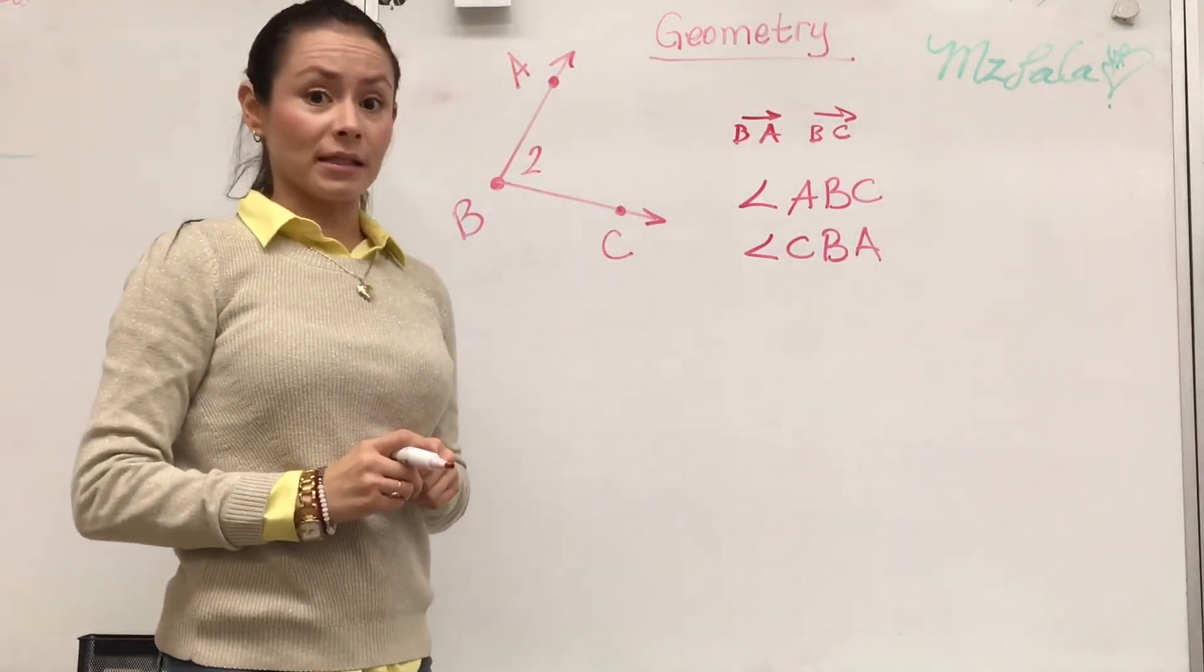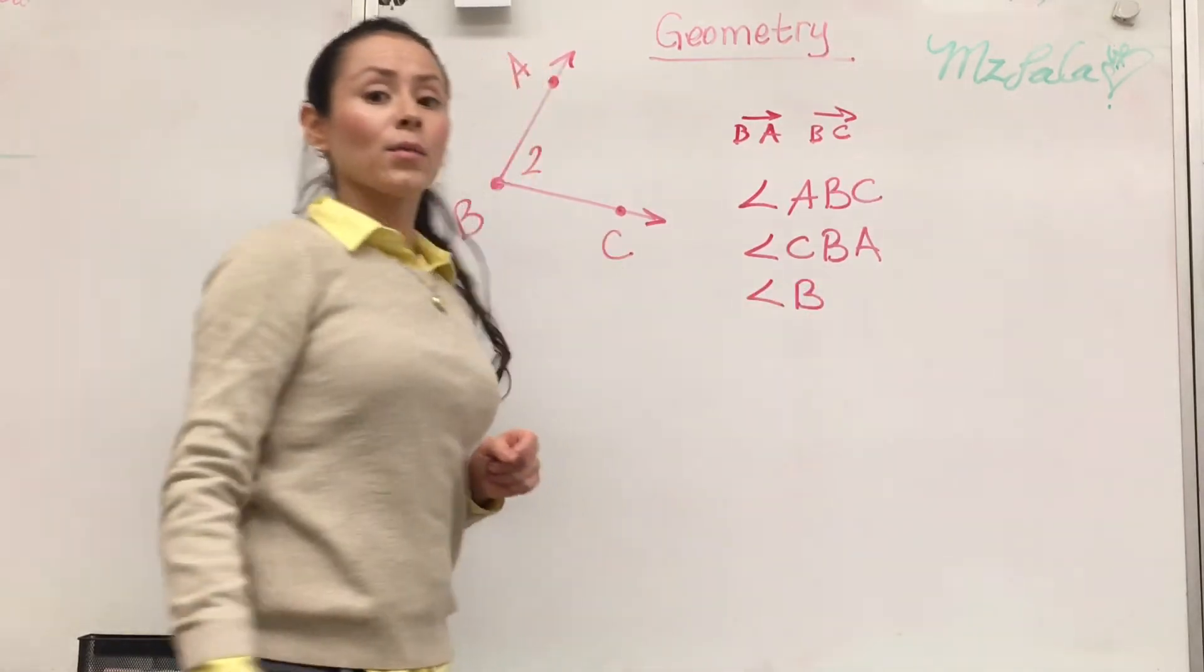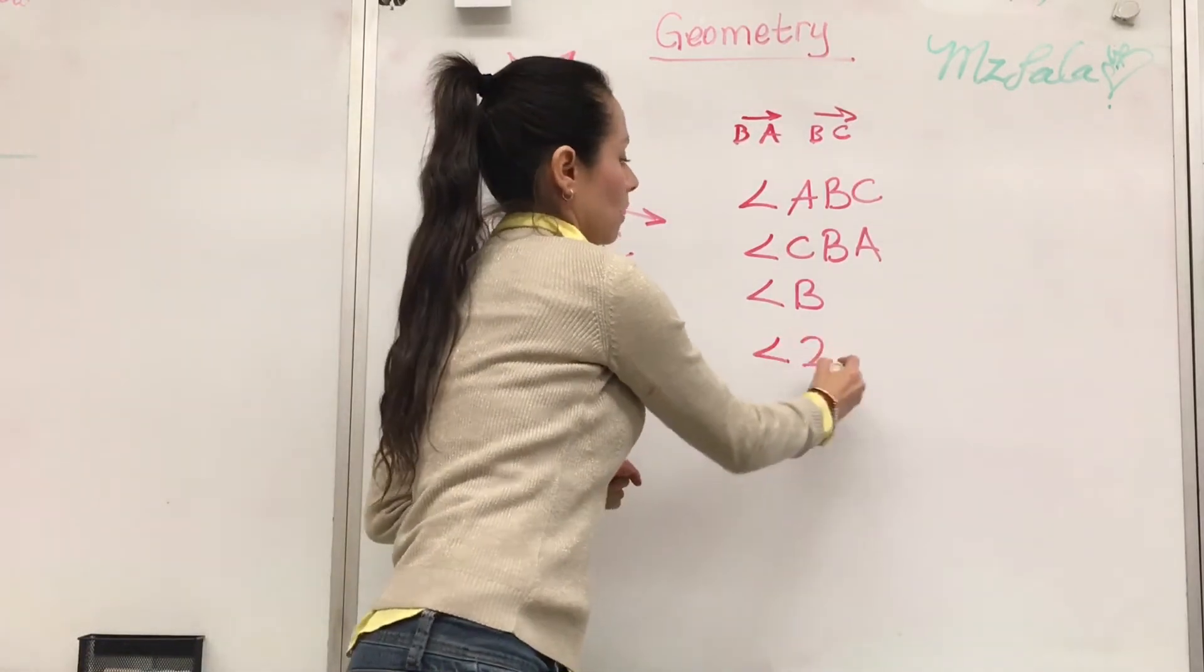We can also call it by its vertex. We can call it angle B. And we can call it angle 2 because 2 is also its vertex.